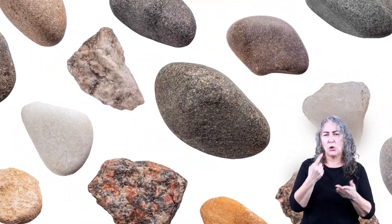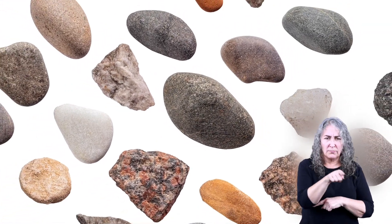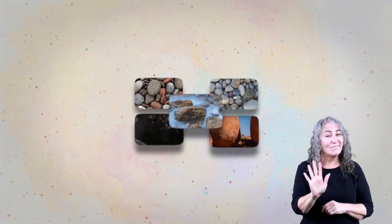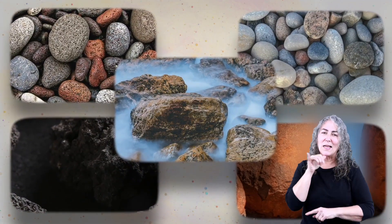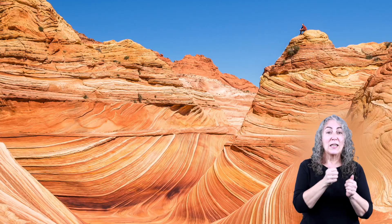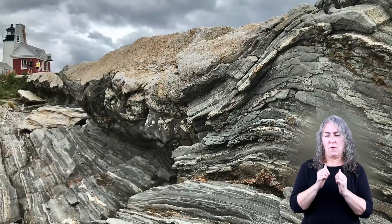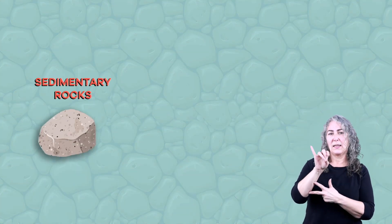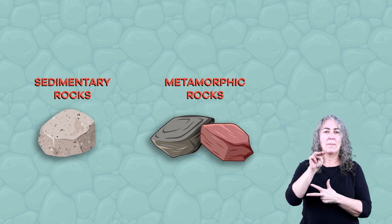You have probably looked at many rocks in your lifetime. Even though they may look alike, rocks are not all the same. The type of each rock is determined by how the rock formed over time. There are three main types of rocks: sedimentary, metamorphic, and igneous.